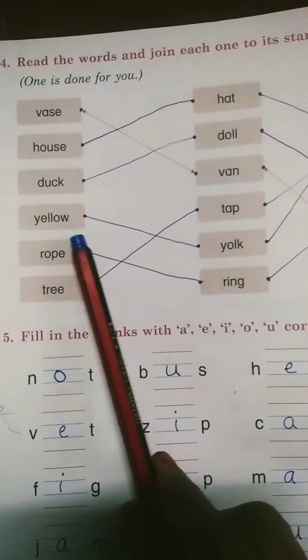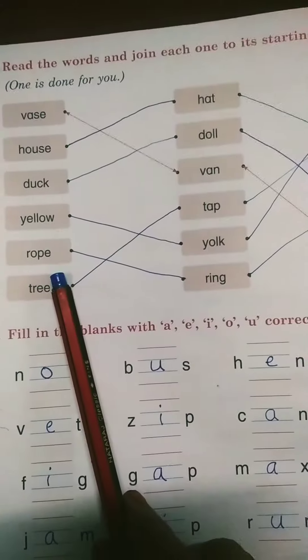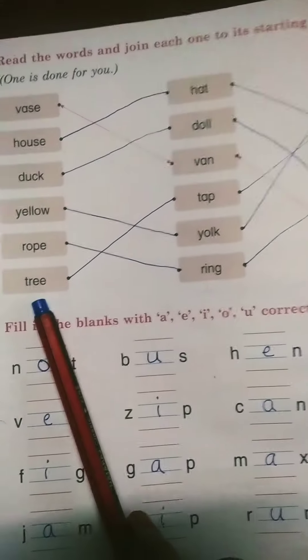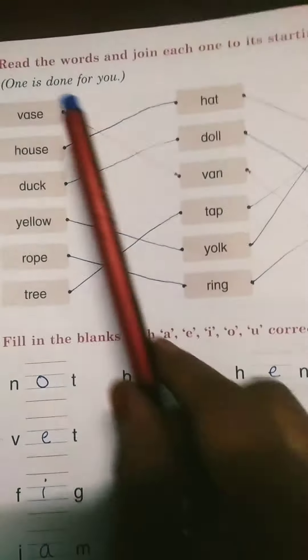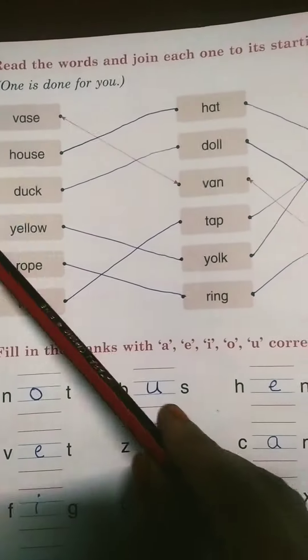Duck, doll. Yellow, york. Rope, ring. Tree, tap. In these spellings, the first letter is the same way, okay?